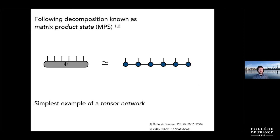This multi-low-rank decomposition of a large tensor has a name: the matrix product state, also called a tensor train in the mathematical literature. It's getting used more and more outside of physics — in solving differential equations, factorizing tensors in neural network weights, and similar applications. In physics, it was introduced following the invention of the DMRG algorithm, and is really the canonical simplest example of a tensor network.